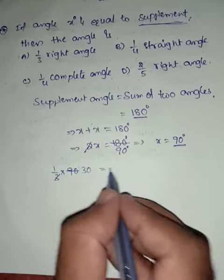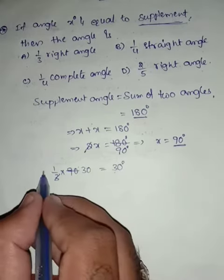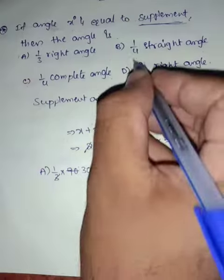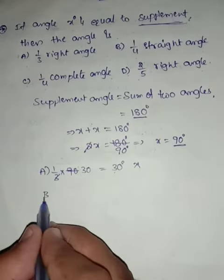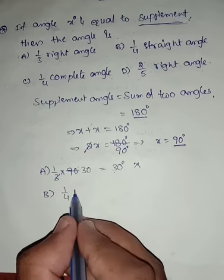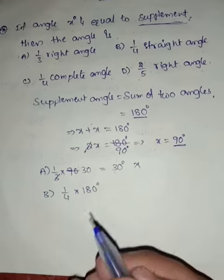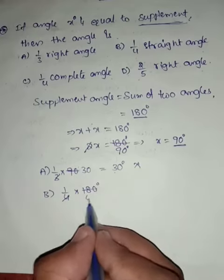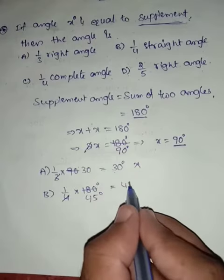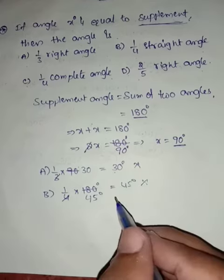Now check option A: 1/3 right angle means 1/3 of 90 degrees, which equals 30 degrees. That does not equal 90 degrees. Option B: 1/4 straight angle means 1/4 of 180 degrees, which equals 45 degrees. That also does not equal 90 degrees.